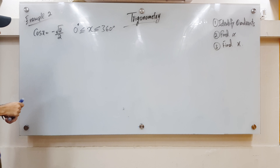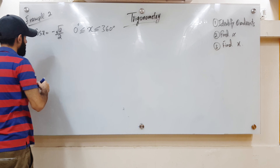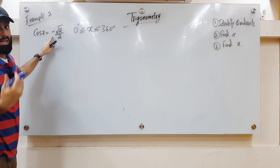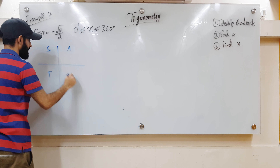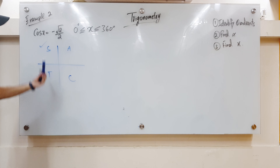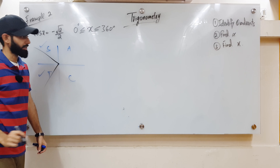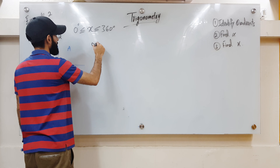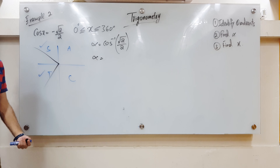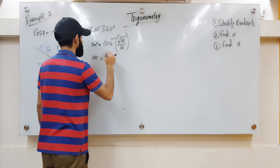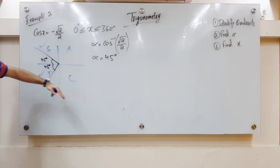Let's do another example — example 2. Step one: identify the possible quadrants. Here, the cosine of some value of x is negative. That can happen in the second or third quadrant, since sine and tan are positive there respectively, making cosine negative. So one value of x could be in the second quadrant and the other in the third. Step two: find alpha. We take the cos inverse of positive √2/2 — remember, always take the inverse of the positive value — and that turns out to be 45 degrees. So the positive acute angle each line makes with the horizontal axis is 45 degrees.